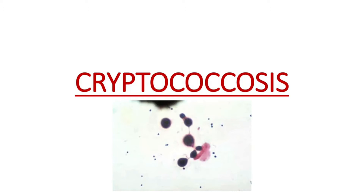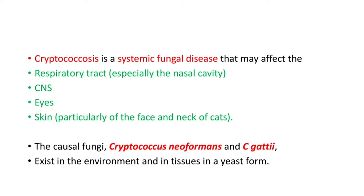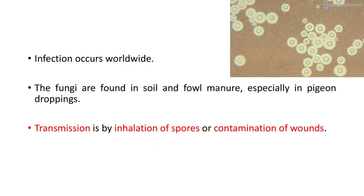Cryptococcosis is a systemic fungal disease that may affect the respiratory tract, especially the nasal cavity, CNS, eyes, and skin — particularly of the face and neck of cats. The causative fungi are Cryptococcus neoformans and Cryptococcus gattii, which exist in the environment and in tissues in a yeast form. Infection occurs worldwide and the fungi are found in soil and fowl manure, especially in pigeon droppings. Transmission is by inhalation of spores or contamination of wounds.